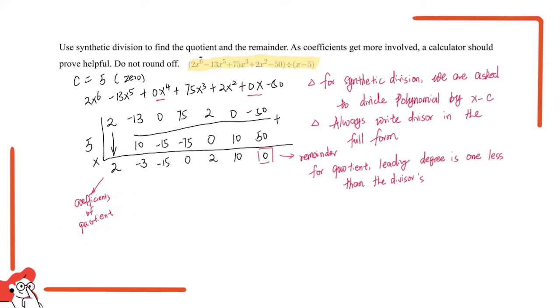We should write our quotient out now. So we have 2x^5 - 3x^4 - 15x^3 + 0x^2, which is still equal to 0. We can write it or not. It doesn't matter. And plus 2x + 10.